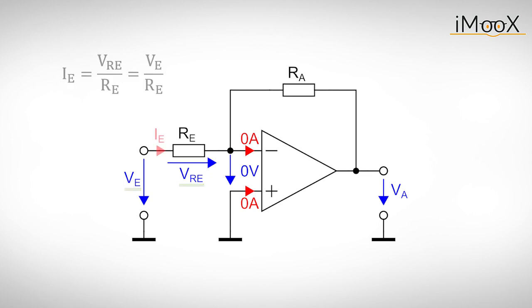And we can calculate the current Ie. Since I minus is 0A, Ie flows on through Ra and causes a voltage drop Vra. This voltage drop equals Ra times Ie.